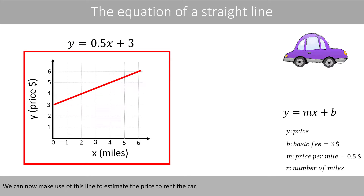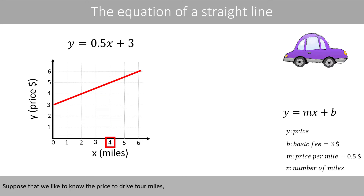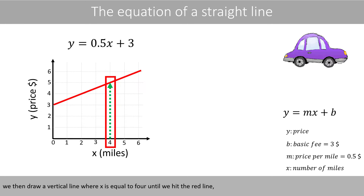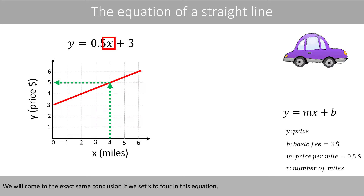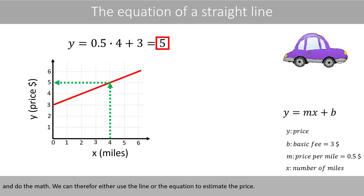We can now make use of this line to estimate the price to rent the car. Suppose that we like to know the price to drive 4 miles. We then draw a vertical line where X is equal to 4 until we hit the red line. Then we draw a horizontal line until we hit the Y axis. This tells us that if we drive 4 miles, we have to pay 5 dollars. We'll come to the exact same conclusion if we set X to 4 in this equation and do the math. We can therefore either use the line or the equation to estimate the price.